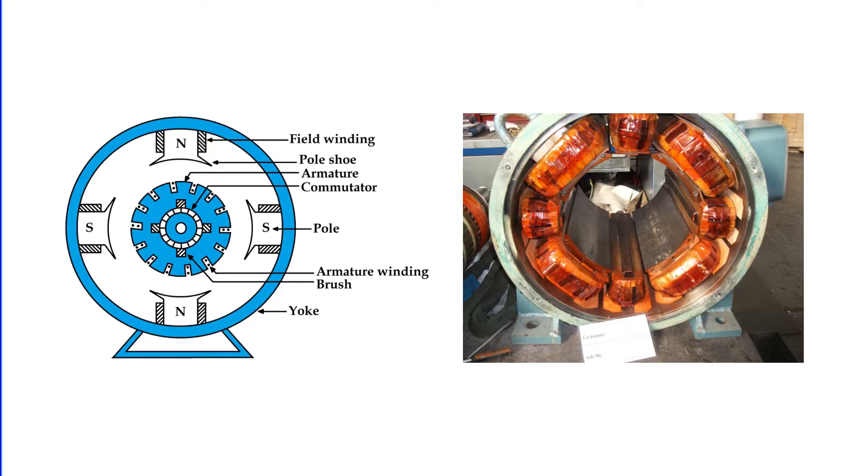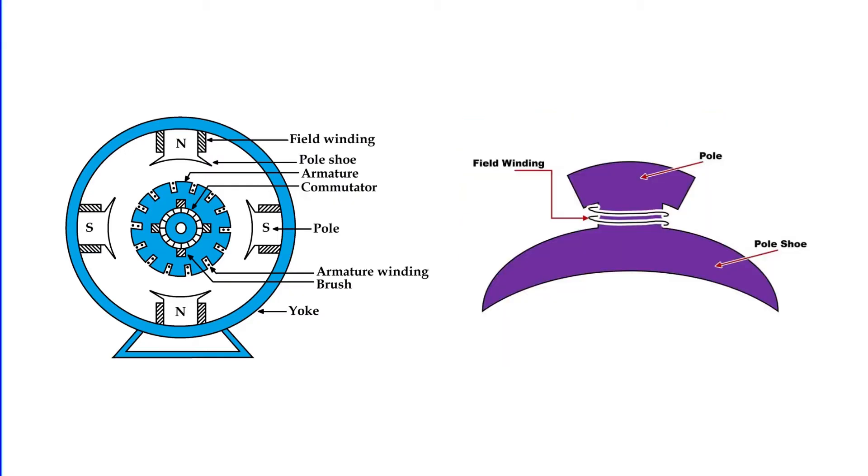Moving on to the poles and field winding, these elements are integral to producing the main magnetic field within the generator. Affixed to the yoke's inner periphery, the poles are constructed from laminated steel sheets, designed to minimize eddy current losses. These poles are salient, extending inward towards the armature, with pole shoes that help distribute the magnetic flux evenly across the air gap and provide a base for the field coils.